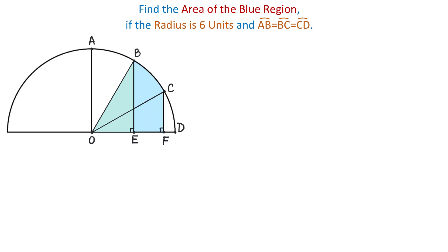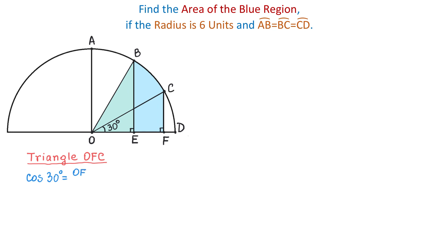Let's start by finding the area of triangle OFC. To find this area we need to know the base and the height. The hypotenuse of this triangle is 6 units because this is also the radius of the circle. We also know that this angle measures 30 degrees. Using trigonometric functions, cosine of 30 degrees equals the adjacent side OF divided by the hypotenuse OC, so cosine of 30 degrees equals OF divided by 6.